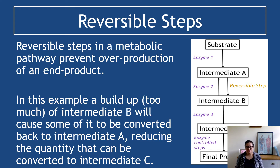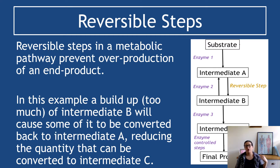Reversible steps in a metabolic pathway help to prevent overproduction of a particular product. In this example, there's a reversible step between intermediate A and intermediate B — you can tell it's reversible because the arrows go in both directions. This is controlled by enzyme 2. We start with our substrate, and the word 'intermediate' just means something that isn't quite the product yet but isn't quite the raw material anymore — it's a stepping stone of the metabolic pathway.